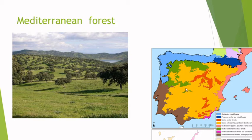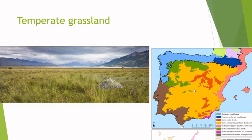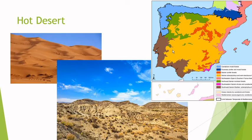Then we've got the temperate grasslands, which have low rainfall so there aren't many trees — mostly grass grows. We have this in Spain as well, more on the coast. Moving to the tropical zone, which is always closer to the equator, we've got the hot desert.